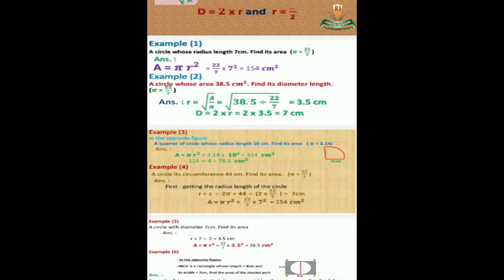Another example: a circle with circumference 44 centimeters — find its area. First, find the radius: radius equals circumference divided by 2π, equals 44 divided by (2 times 22 over 7), equals 7 centimeters. So area equals π times r squared, equals 22 over 7 times 7 squared, equals 154 centimeters square.